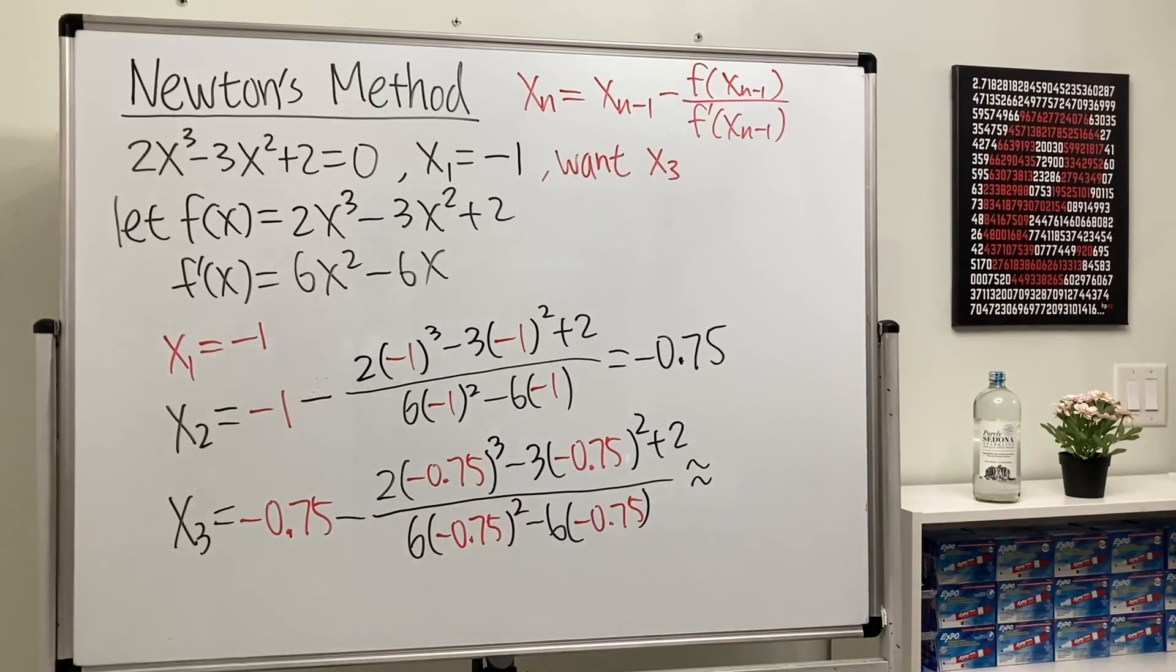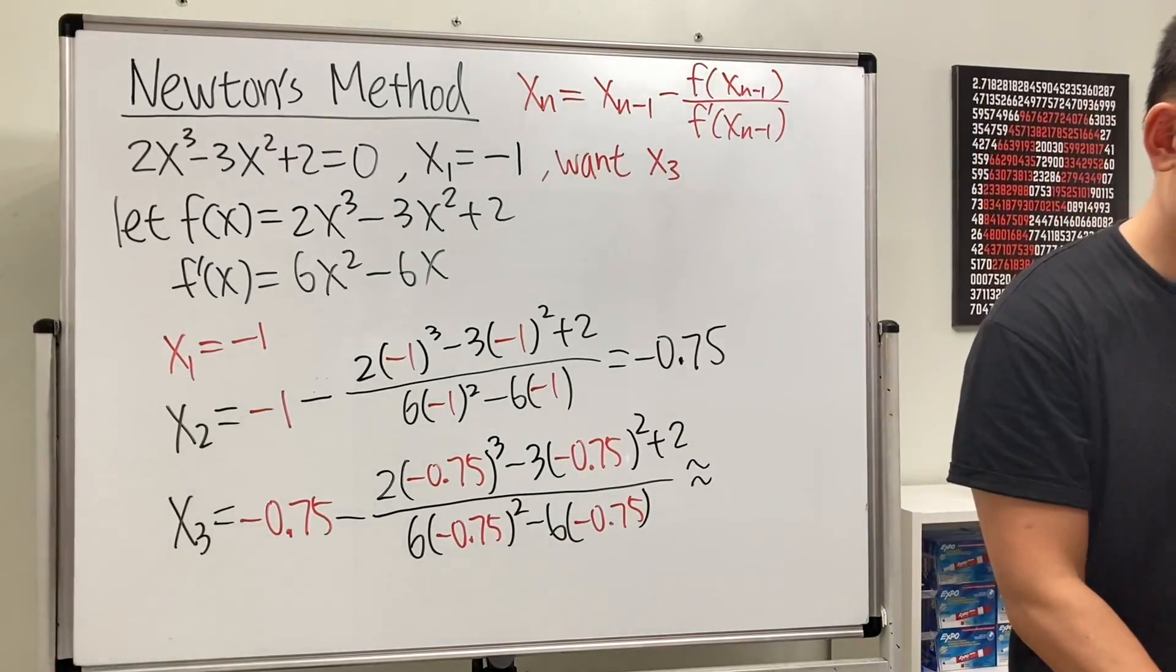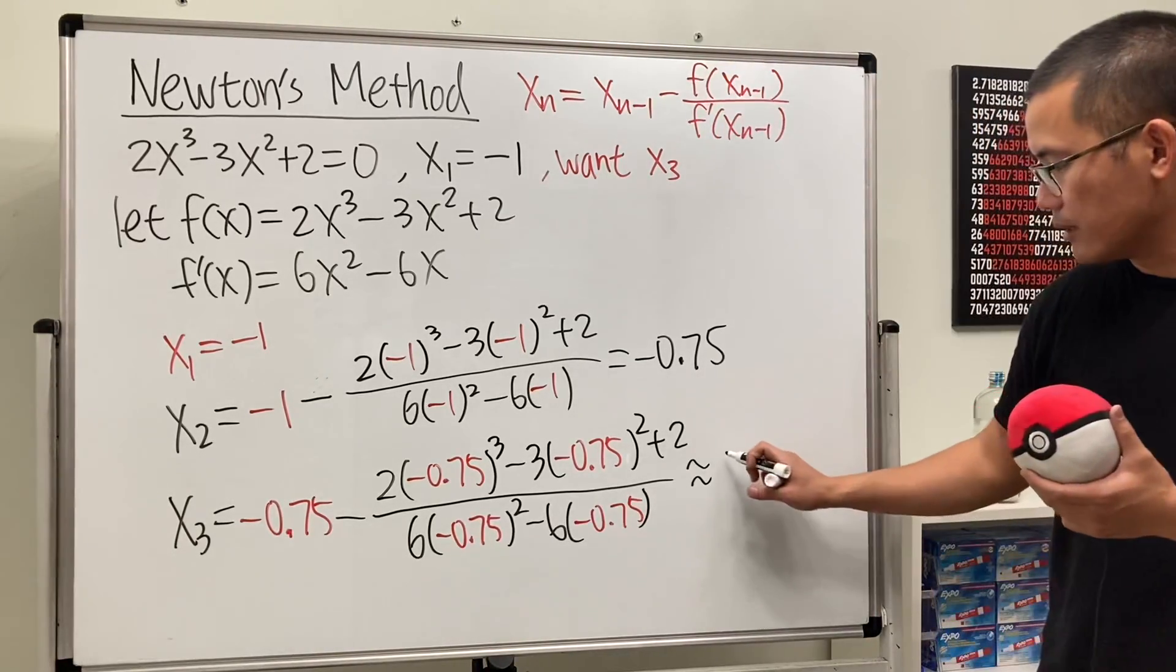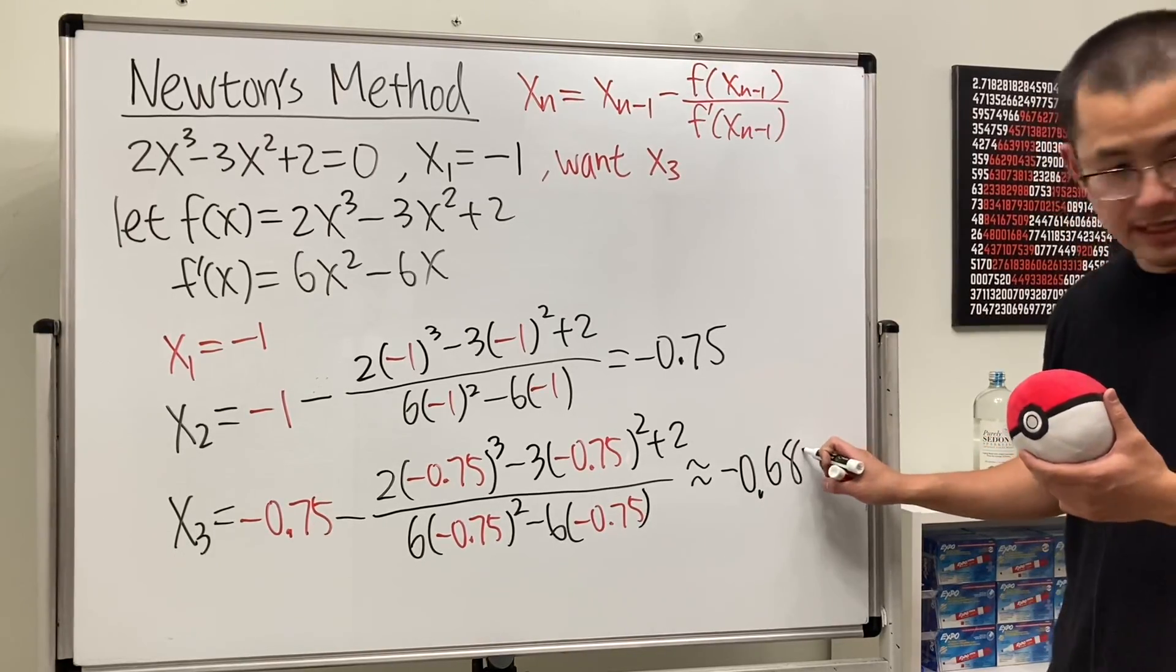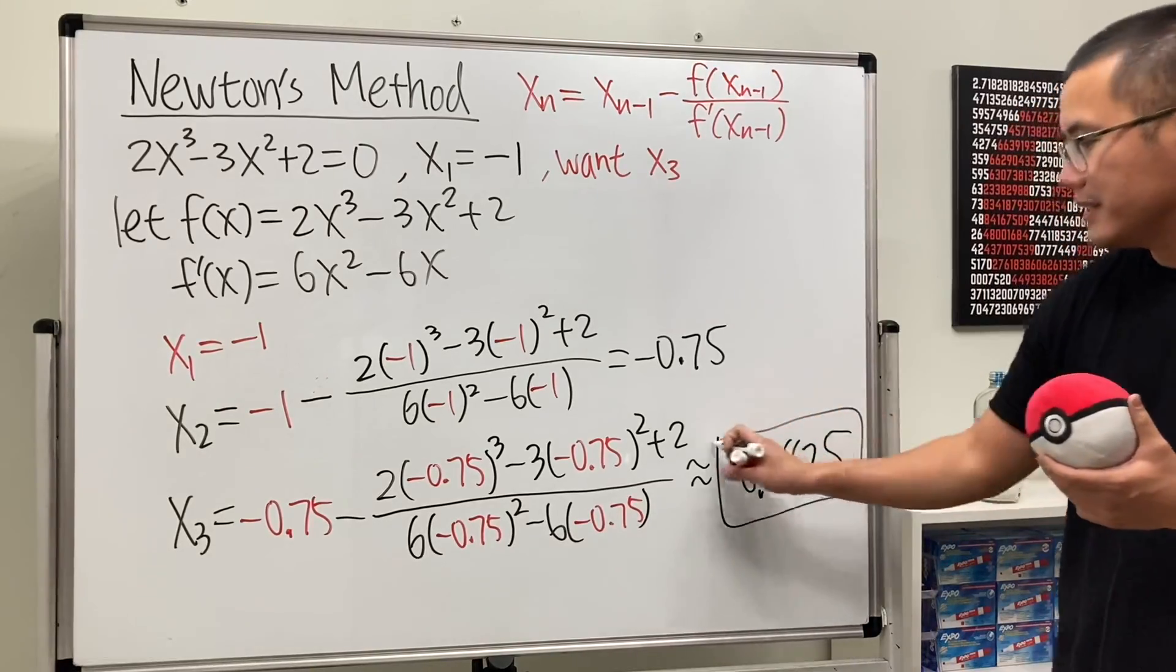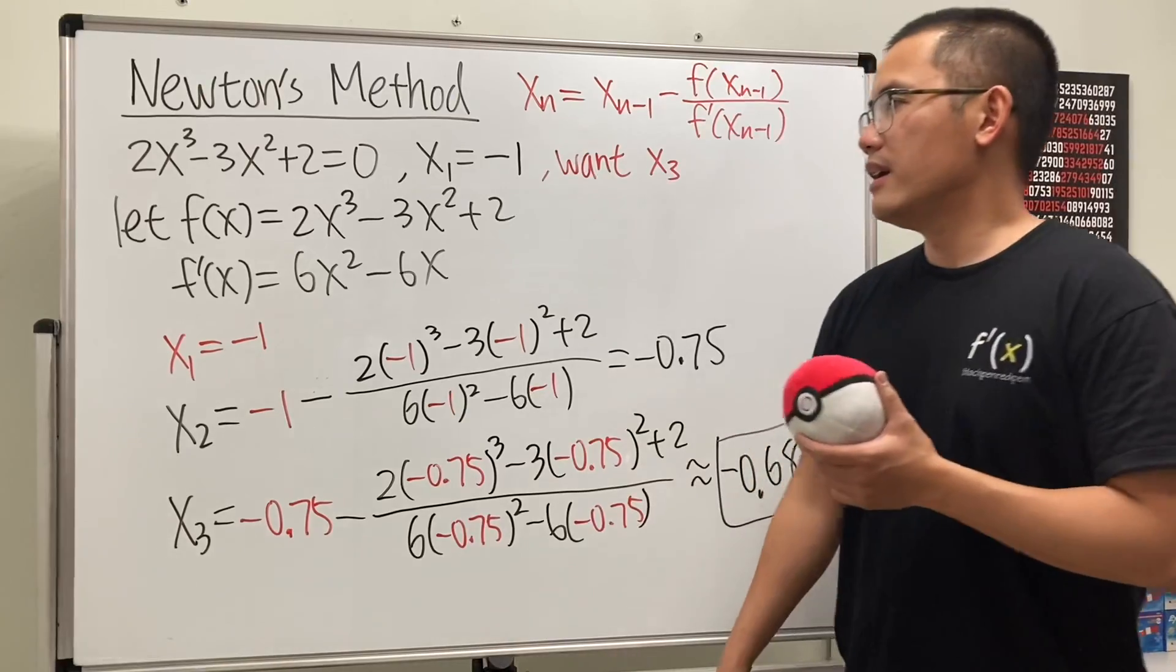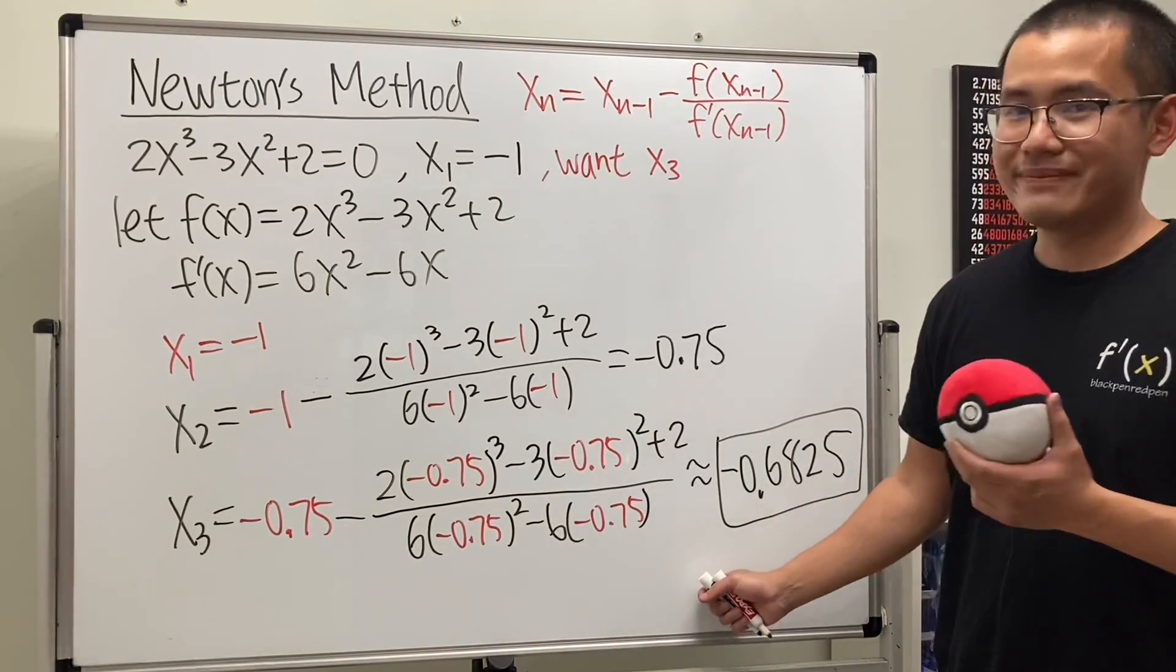And let me see the direction. We want 4 decimal places. So, we are going to have this. Okay, I'll write this down. This is approximately negative 0.6825. And that will do it. Yeah, just two iterations. And, of course, the more you do it, you will see that this one actually converges very nicely. So, yeah, that's it.